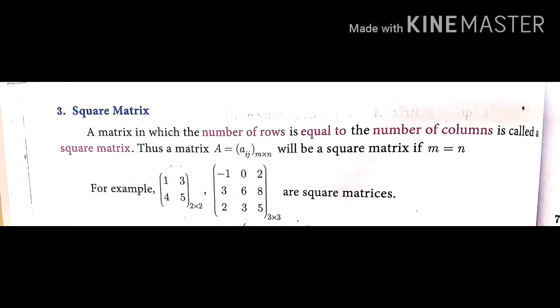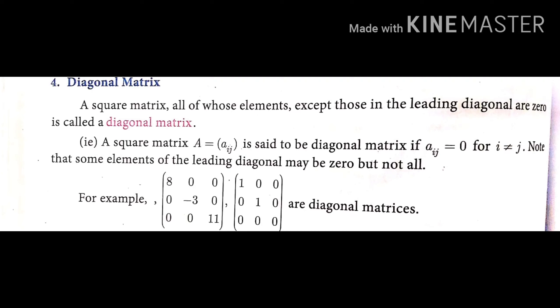The second example is a 3×3 matrix: [-1, 0, 2; 3, 6, 8; 2, 3, 5]. These are called square matrices. Matrices of order 2×2, 3×3, 4×4, and 1×1 are all types of square matrices.